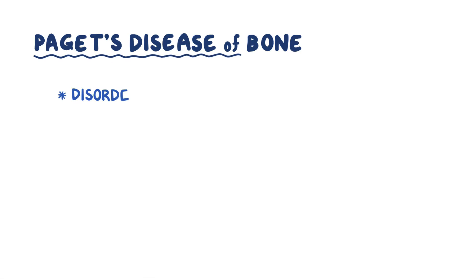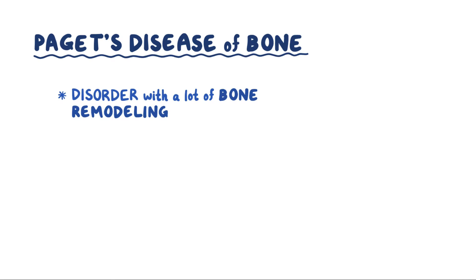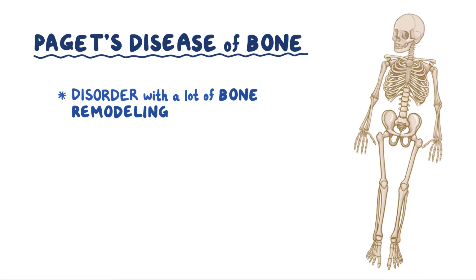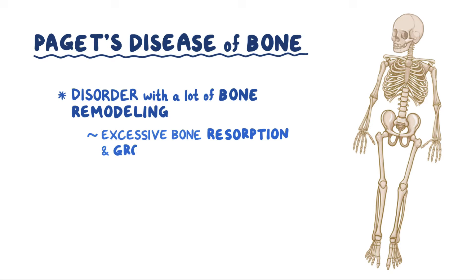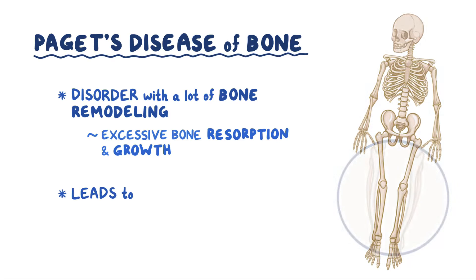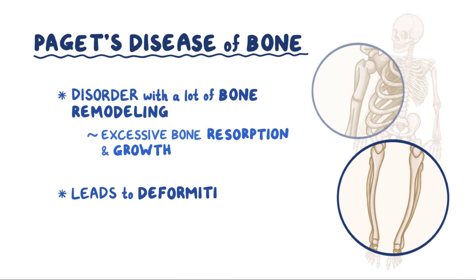Paget's disease of bone is a disorder in which there's a lot of bone remodeling that happens in some regions of the bone. Typically, there's excessive bone resorption followed by excessive bone growth, and that leads to skeletal deformities and potential fractures.